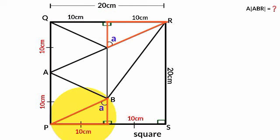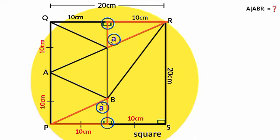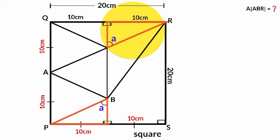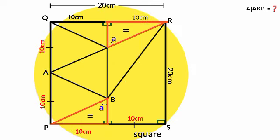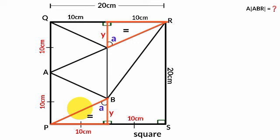Looking at the two triangles formed, both are right-angled triangles and both contain angle A, which proves they are similar. Furthermore, the sides facing angle A in each triangle are equal in length, which means the triangles are not just similar but congruent. Since they are congruent, all corresponding sides are equal — the side facing the third angle is Y in both, and the hypotenuse facing the right angle is Z in both.